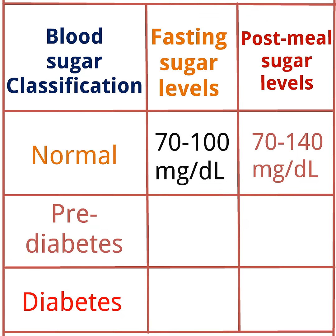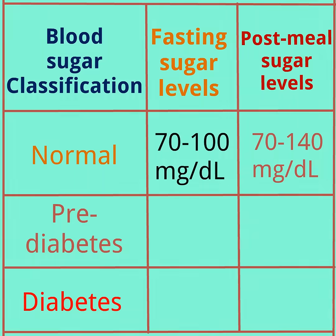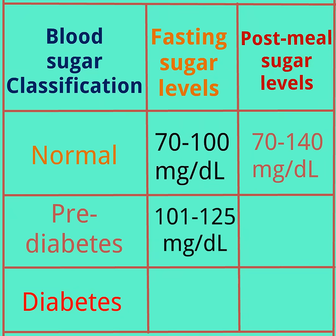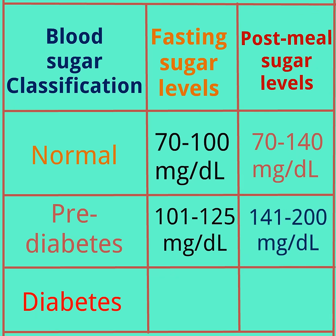The pre-diabetic condition has a fasting blood sugar level of 101 to 125 mg per deciliter, and a post-meal blood sugar level between 141 to 200 mg per deciliter.